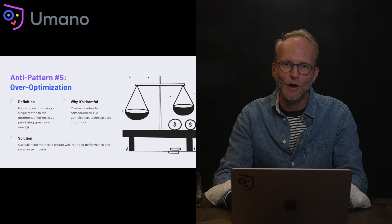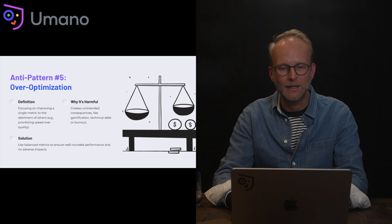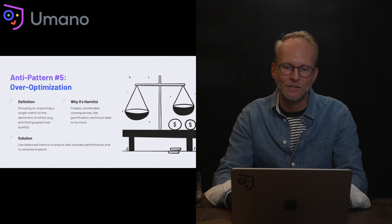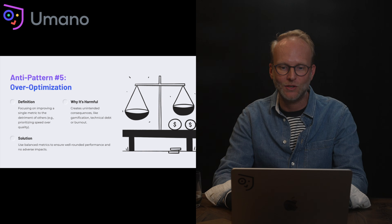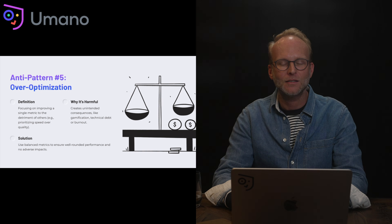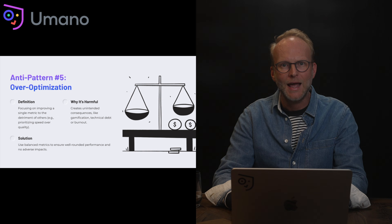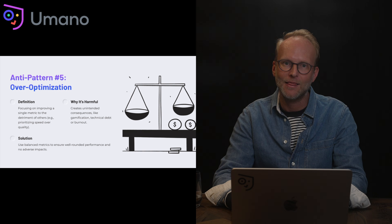Anti-pattern five: over-optimization. This is where teams focus only on optimizing one metric in particular, to the detriment of other metrics that may be adversely impacted. It's harmful because of unintended consequences like gamification — it becomes easy to trick a single metric into telling a particular story, such as masking technical debt or burnout. The solution is to use a balanced approach: come back to the core outcome you're seeking and ensure there are two to three metrics providing different lenses into that practice.